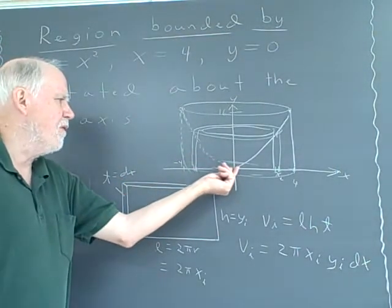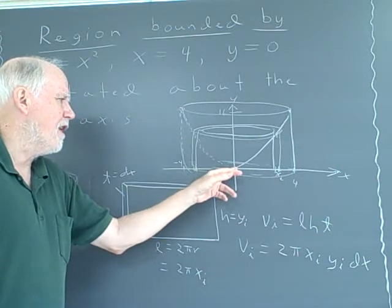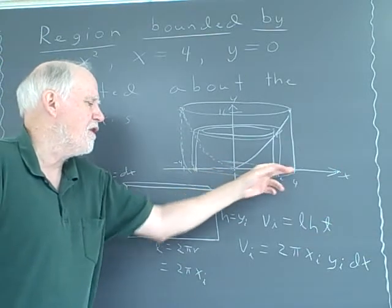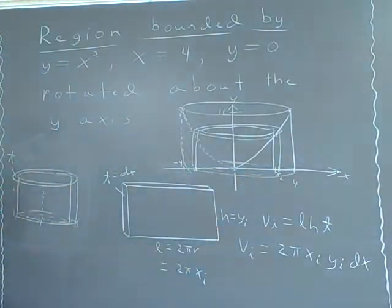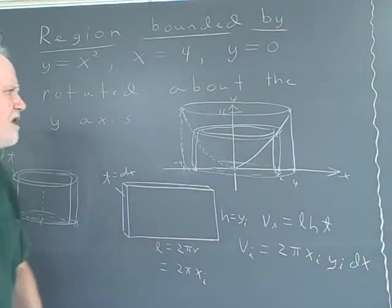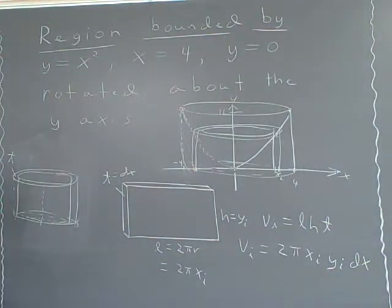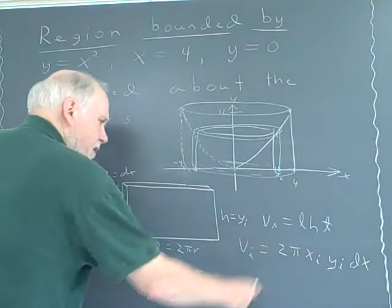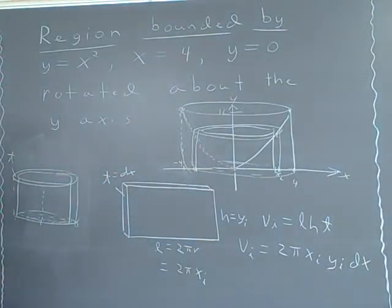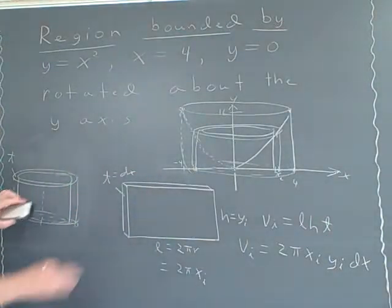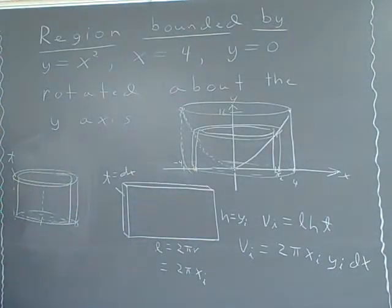And that's the volume of each one of them. Now, if I start very right here, x sub i right very close to zero, and I move all the way out to 4, and I get a million of them and add them up, I'll have a pretty good idea of the volume of this object. Of course, that special sum gives us a definite integral.